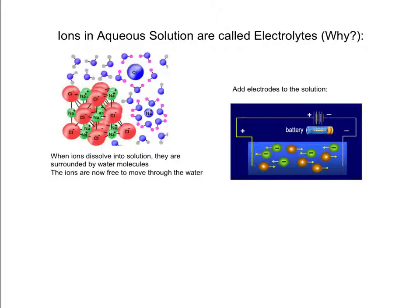Not all substances that dissolve in water produce ions. Some substances are electrolytes and some are not. So let's take a look at which ones are and which ones are not.